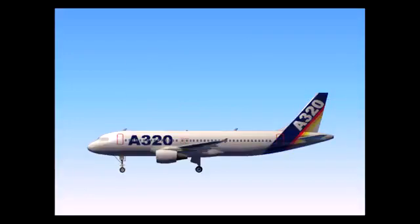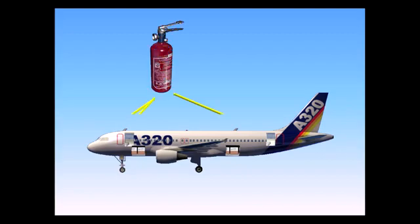The A320 has fire detection and extinguishing systems for the engines and APU, smoke detection in the avionics bay, smoke detection and fire extinguishing systems in the cargo compartments and lavatories, and portable fire extinguishers for the flight compartment and cabin.